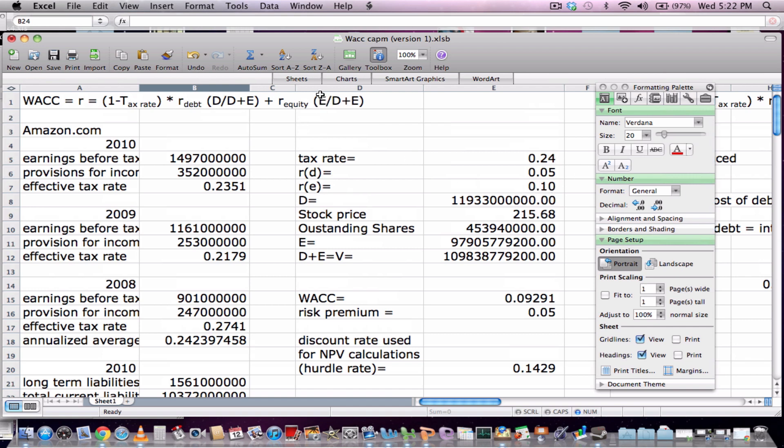Now to find the total equity of the firm, you have to find the stock price and the total number of outstanding shares. Now it is important when finding the equity to use market values, not book values. Market values give you a more realistic expectation of investors' requirements rather than book values.